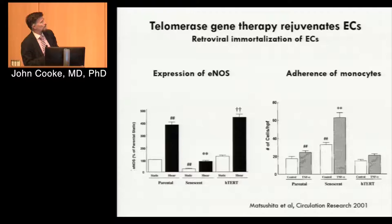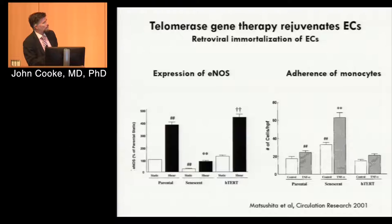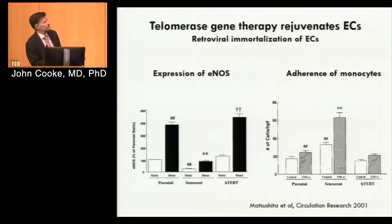With shear stress, production of eNOS goes up and the cells make more nitric oxide. The senescent cells — aged by many passages in cell culture — made less nitric oxide and responded less to shear stress. But we could take senescent endothelial cells, expose them to retroviral H-TERT, and show that it increased telomere length, reversed telomere erosion, and enhanced nitric oxide production. Adherence of monocytes goes up in senescent endothelial cells, and goes down with H-TERT treatment. So yes, we could restore endothelial cells.